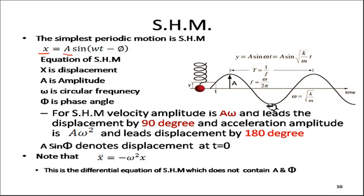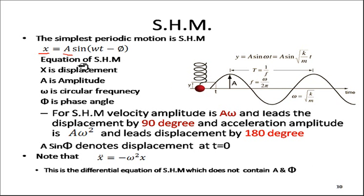We consider this motion as simple harmonic motion and express displacement x as: x = A sin(ωt − φ), where x is displacement at time t, A is amplitude, ω is circular frequency, and φ is phase angle. For SHM, the velocity amplitude is Aω — obtained by differentiating x with respect to t — and velocity leads displacement by 90 degrees. The acceleration amplitude is Aω², leading displacement by 180 degrees.